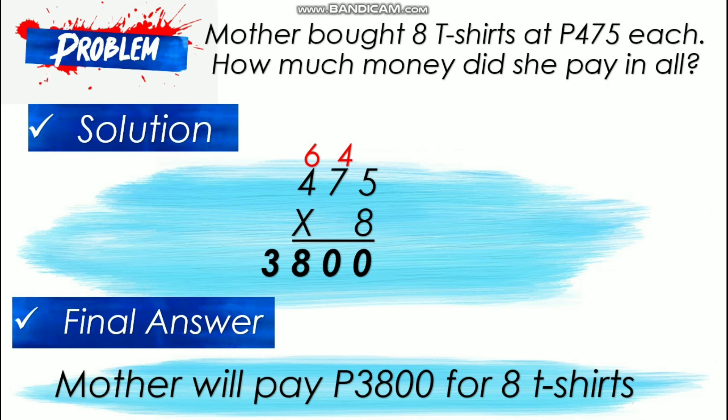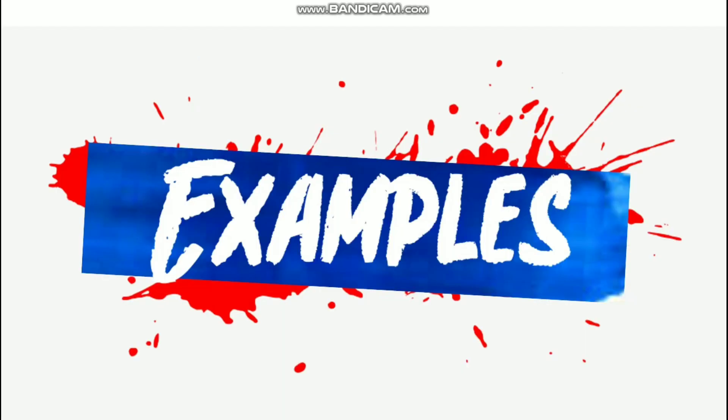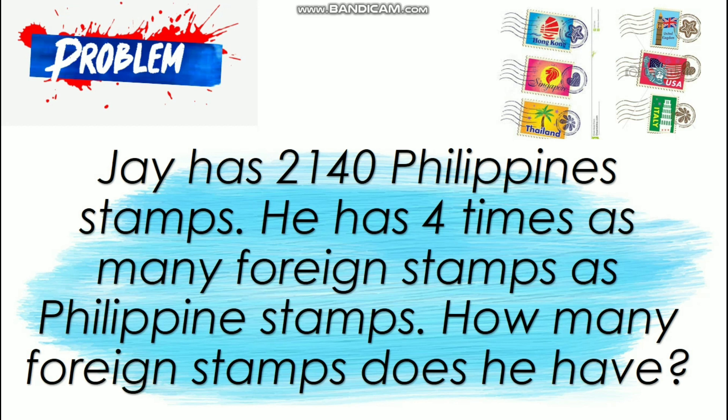How did you find solving the word problem? Is it easier than a real-life problem? Let's have more examples. Join me in reading this problem. Jay has 2,140 Philippine stamps. He has 4 times as many foreign stamps as Philippine stamps. How many foreign stamps does he have?